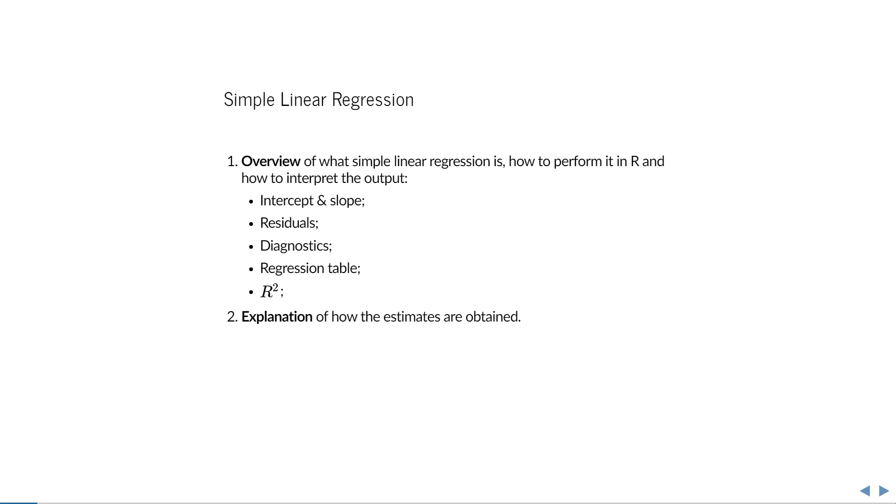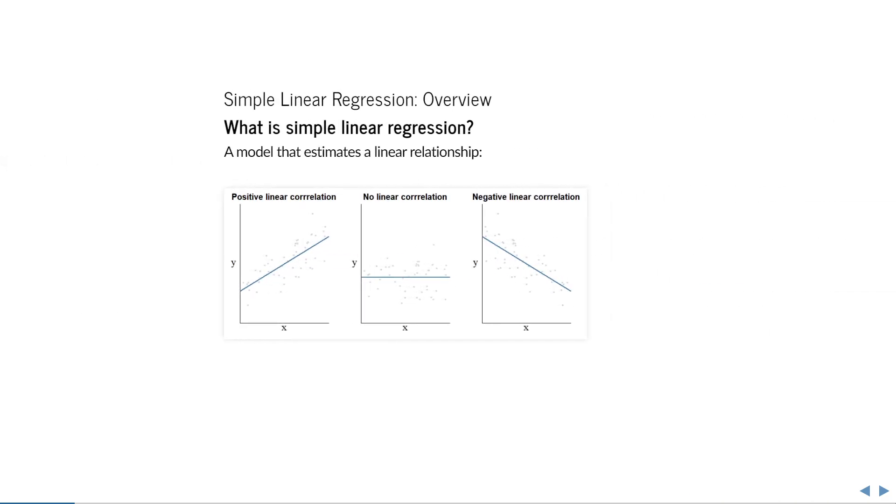In the next video, I'll explain how the estimates are actually obtained. In short, simple linear regression estimates a line that shows how one continuous variable changes when the other does. If the line goes up, then there is a positive linear correlation between the two, and if the line goes down, there is a negative linear correlation. If the line is more or less flat, then the two variables are not linearly correlated.